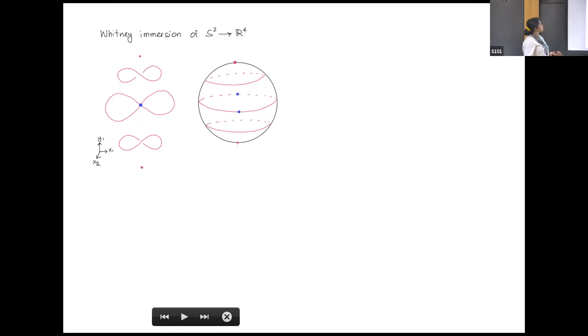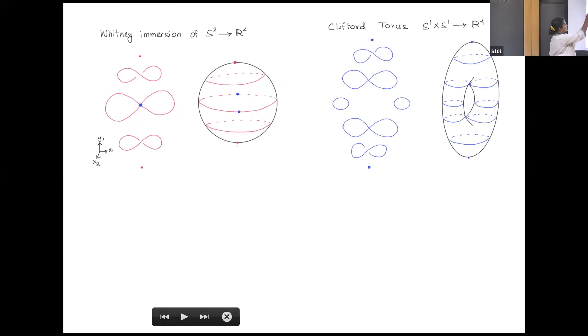A related example is this Clifford torus, which is an embedding of the torus into R4. The slices look like that. The beginning part looks like this, but then you do something different in the middle.